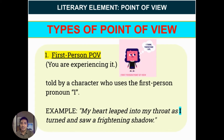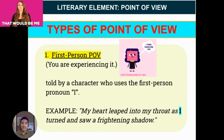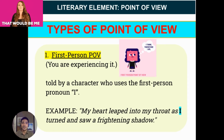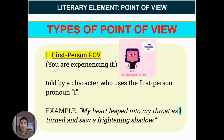First person point of view means you are experiencing it. This is told by a character who uses the first person pronoun, I. For example: 'My heart leaped into my throat as I turned and saw a frightening shadow.'